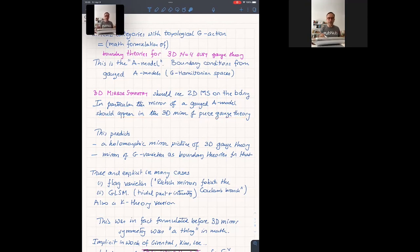So whatever it is, we want to call the 3D mirror, you should see the complex mirror of a G manifold on that one. So what we extract from here is there should be a holomorphic mirror picture of 3D gauge theory. And here you can be a bit specific. This should be a Rozansky-Witten theory. That's what physicists tell us.